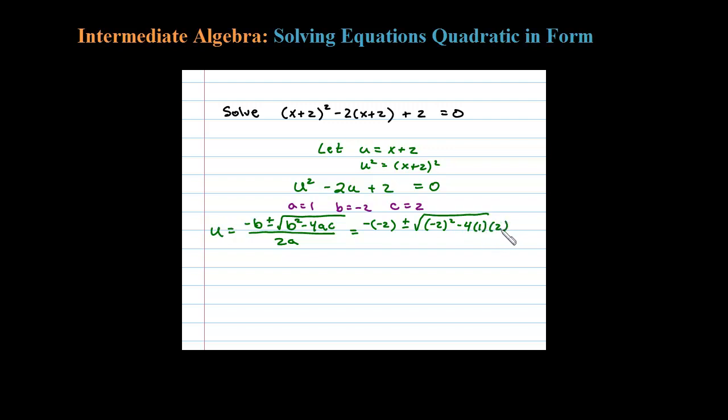Simplifying: negative negative 2 is just positive 2, plus or minus the square root of 4 minus 8, all over 2. Four times 2 is 8. So notice here the discriminant is negative. Inside there I have a -4, that tells me I'm going to get two complex solutions.